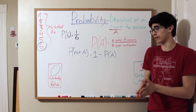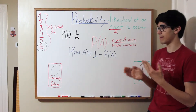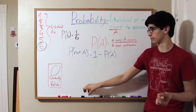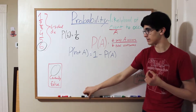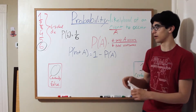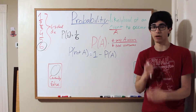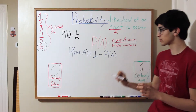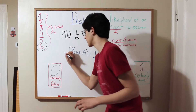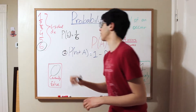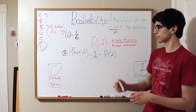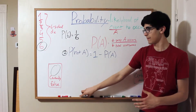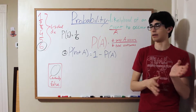For this video, we're going to discuss which mathematical principles we need to know in order to make our understanding of probability relevant to the problems we'll discuss. The first, and perhaps the most simple, is the probability of not A — the probability of something not happening.